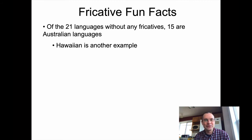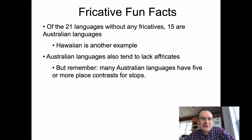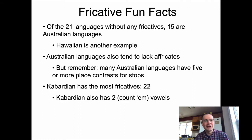Hawaiian is another example of a language without fricatives — which is kind of cool, though I should qualify that because if you consider H a fricative, you can say 'Hawaii' in Hawaiian, so those slides might need revision. Australian languages have lots of place contrasts for stops and also tend to lack affricates, which is another unique feature of that continent's languages.